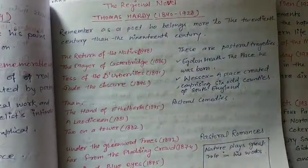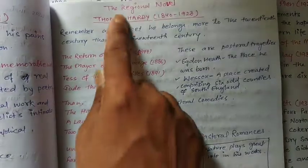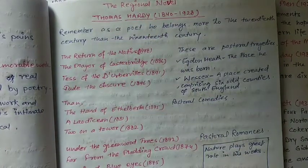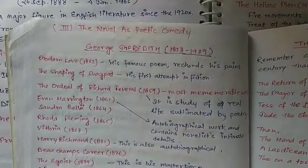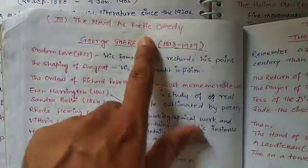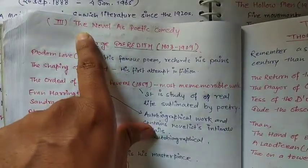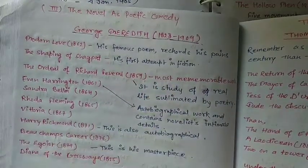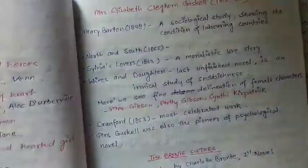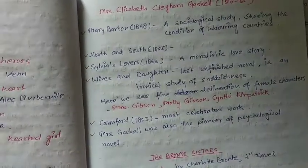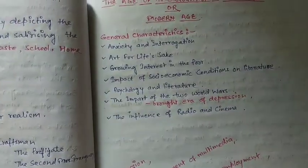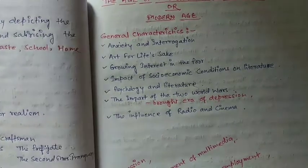You will also find R.L. Stevenson, Edward Bulwer-Lytton, Anthony Trollope, and Thomas Hardy. This section covers the Victorian novel. There are notes on the novel as poetic comedy with short notes for in-depth knowledge. Moving to drama, George Eliot is covered, and then we come to the modern period.